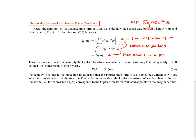When we perform the substitution s = jω, this gives us the first line. We then observe that the highlighted integral is simply a Fourier transform integral — in particular, the Fourier transform of the function x. In other words, we have this last line, which is what we were asked to show.